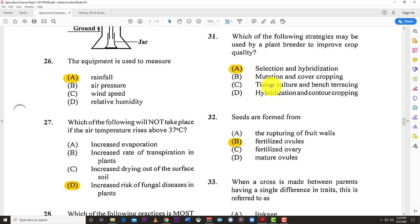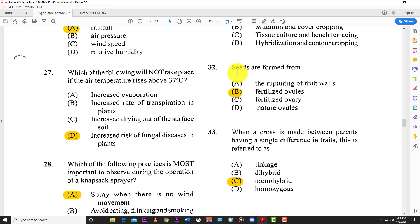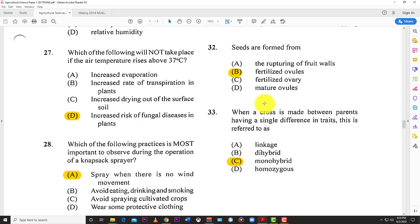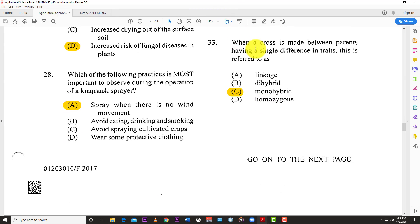Number thirty-one: Which strategies may be used by a plant breeder to improve crop quality? The answer is selection and hybridization. Hybridization means you combine different genes and different plants to mix the qualities, and selection means you pick the best to improve your crops.